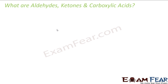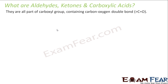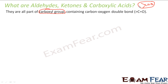Before we start the chapter, the first question is: what are aldehydes, ketones and carboxylic acids? The whole chapter is about these three compounds. They are all part of the carbonyl group — that is, the group which has a carbon-oxygen double bond (C=O). The other two bonds on that carbon can be carbon, hydrogen, oxygen, or nitrogen. All three compounds have a C=O bond.